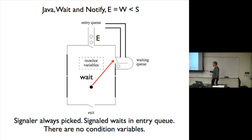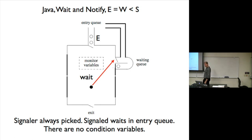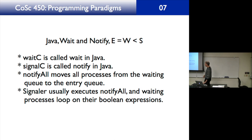The signaler always gets picked, the signal waits in the entry queue, and there are no condition variables. This is the picture of the monitor the way Java does it — it looks like a coffee machine, which is why it's called Java. Java does have semaphores and a binary semaphore is like a mutex. You can always construct a semaphore with a monitor or a monitor with a semaphore.